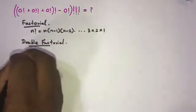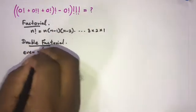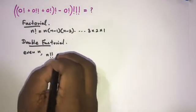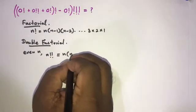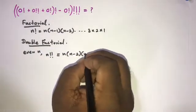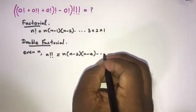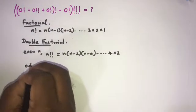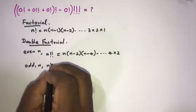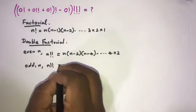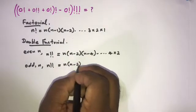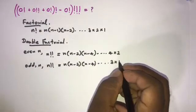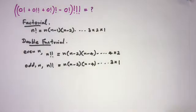For even positive integers n, n double factorial is equal to n times (n minus 2) times (n minus 4) and so on down to 4 times 2. For odd n, n double factorial is equal to n times (n minus 2) times (n minus 4) and so on down to 3 times 1.